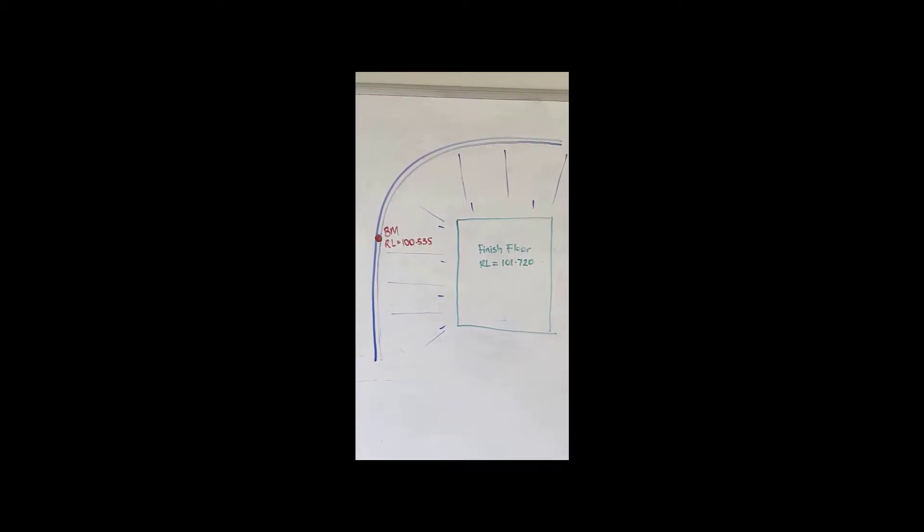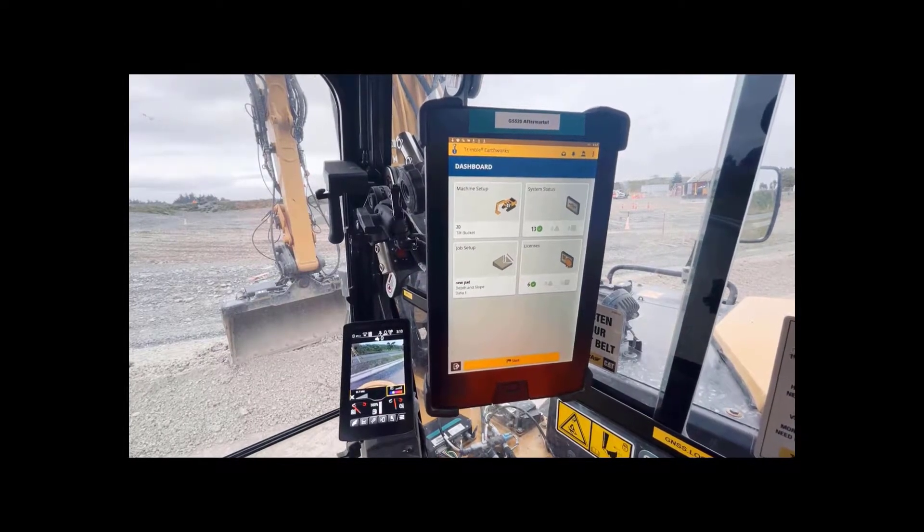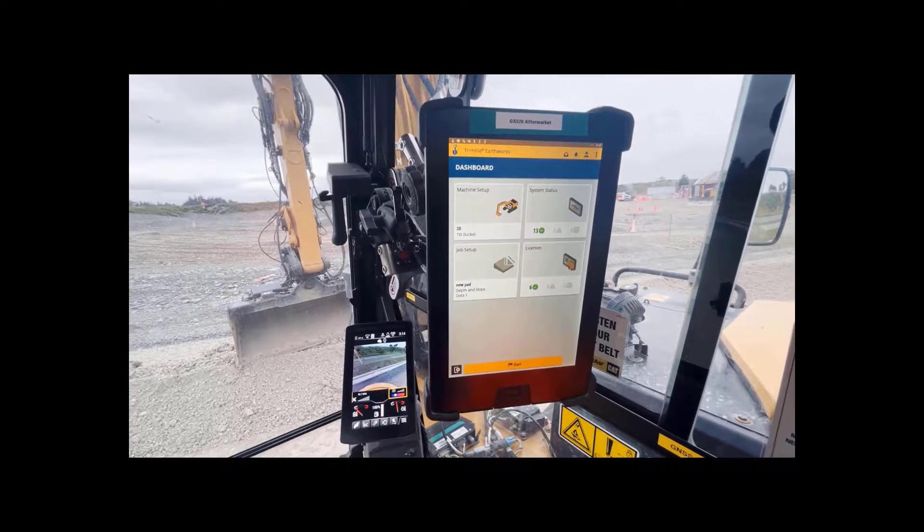Over here we have the cross section showing the finished floor. The green is the concrete — top of concrete finished floor level 101.720. There's 200 millimeters of concrete and then 50 millimeters of blinding sand under that. So I need to work to the underside of the sand first — a little bit of math to do to get from elevation 101.720 down the thickness of the concrete and the layer of sand. That's the level I need to work to.